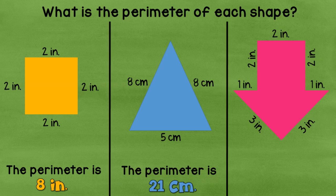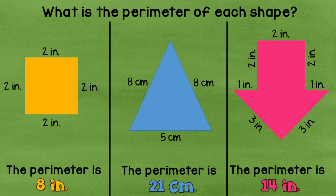Now we take a look at the pink arrow. And there are lots of sides, but they are easy measurements. I can skip count by twos. So let's start there. Two plus two is four. And four plus two is six. Plus one is seven. And seven plus three is ten. And ten plus three is thirteen. And thirteen plus one is fourteen. So my perimeter would be fourteen inches.